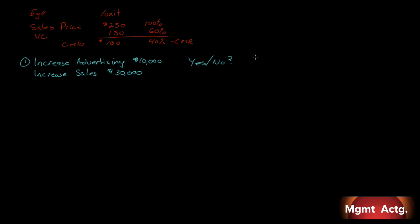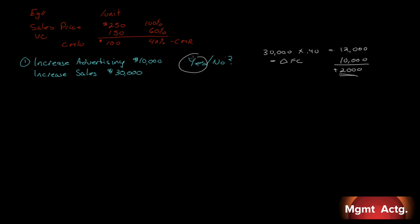That extra $30,000 increase — we have a contribution margin ratio of 40%, so of that $30,000, we get to keep $12,000. That's our total contribution margin at 40%. Less our change in fixed costs of $10,000, because we're increasing advertising, leaves an increase of $2,000. The answer is yes — do it. I didn't have to rewrite the income statement at all.